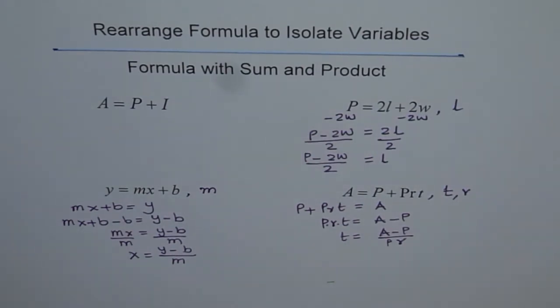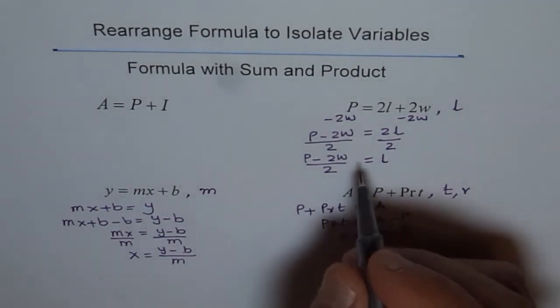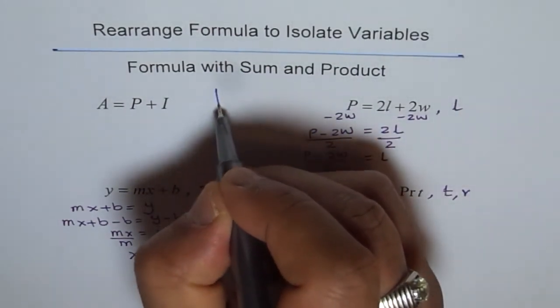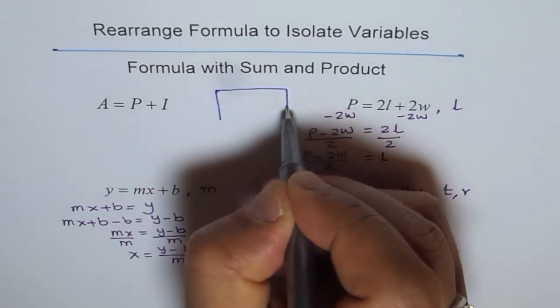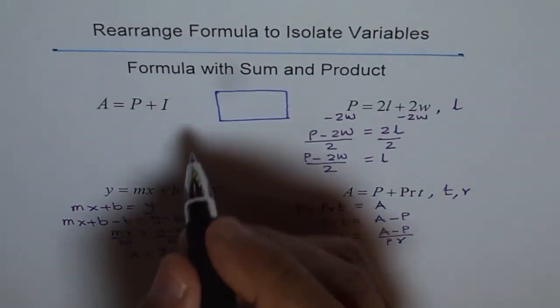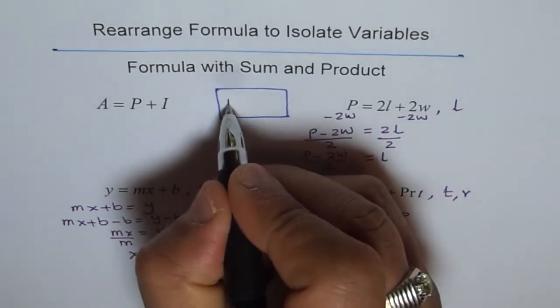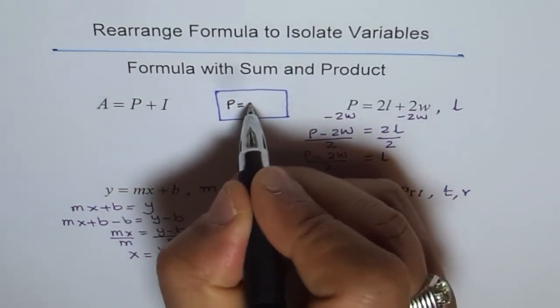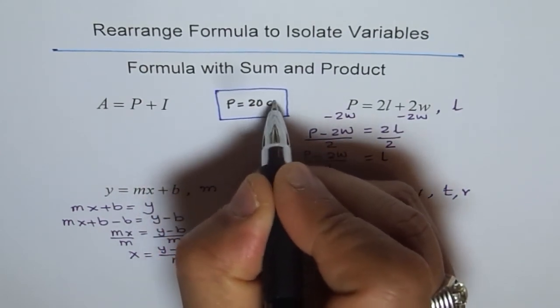Now, let me give you a problem, which you can solve using these formulas. Let's consider a rectangle here. So, this is a rectangle whose perimeter, let me write down, perimeter of rectangle P is equals to, let us say, 20 centimeter.